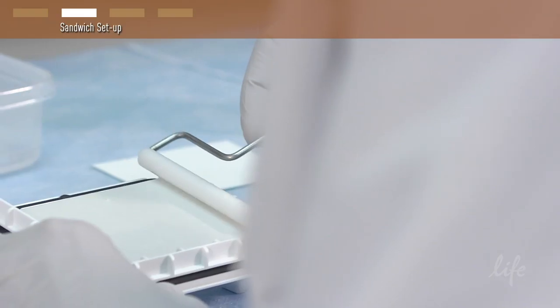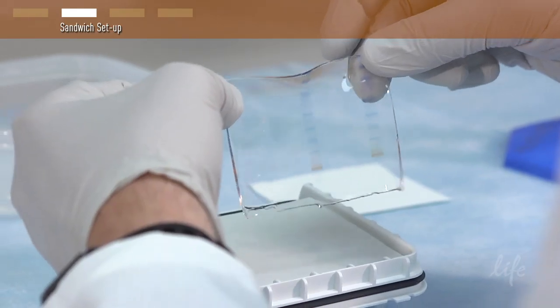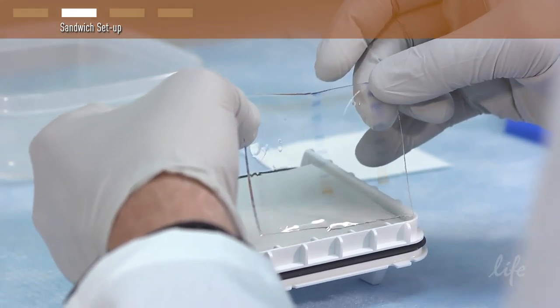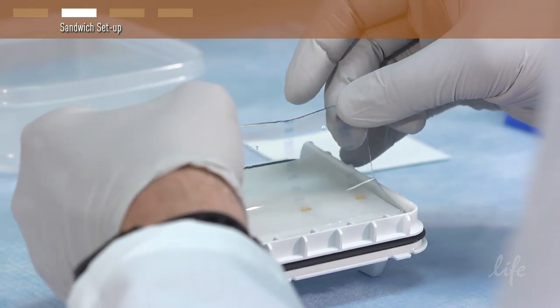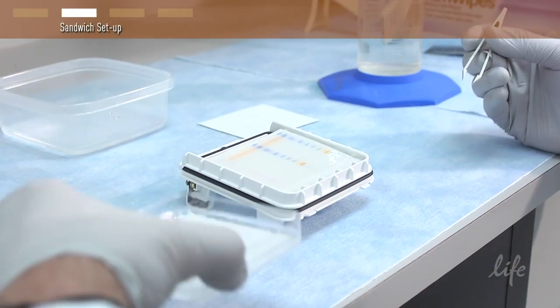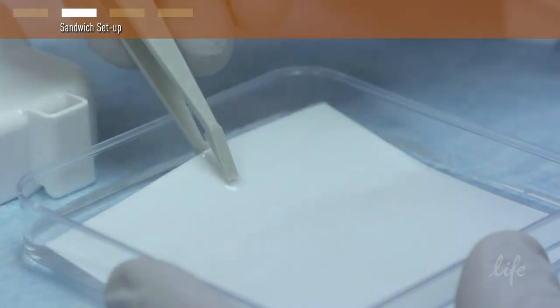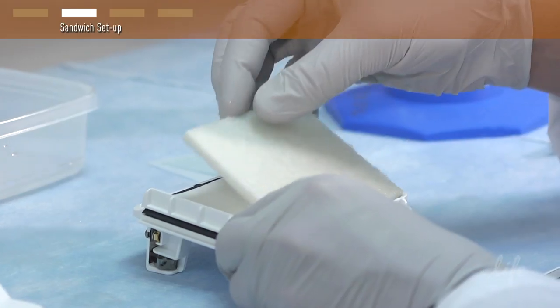Next, use the blot roller to squeeze air bubbles out between each layer. Place the gel on the stack using the roller again to remove air bubbles. Using the tweezers, place the membrane on top of the gel and roll to remove bubbles on the stack.